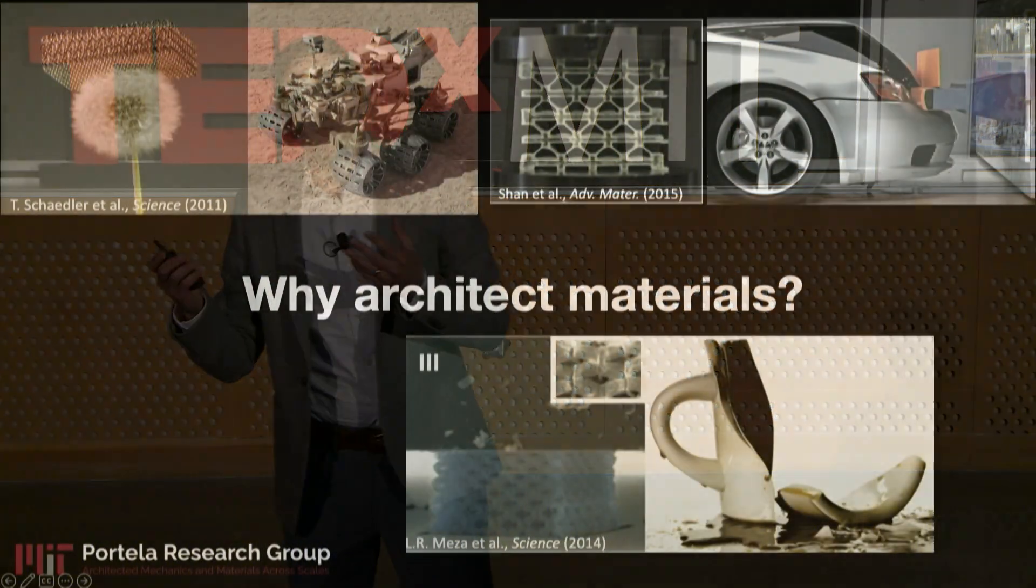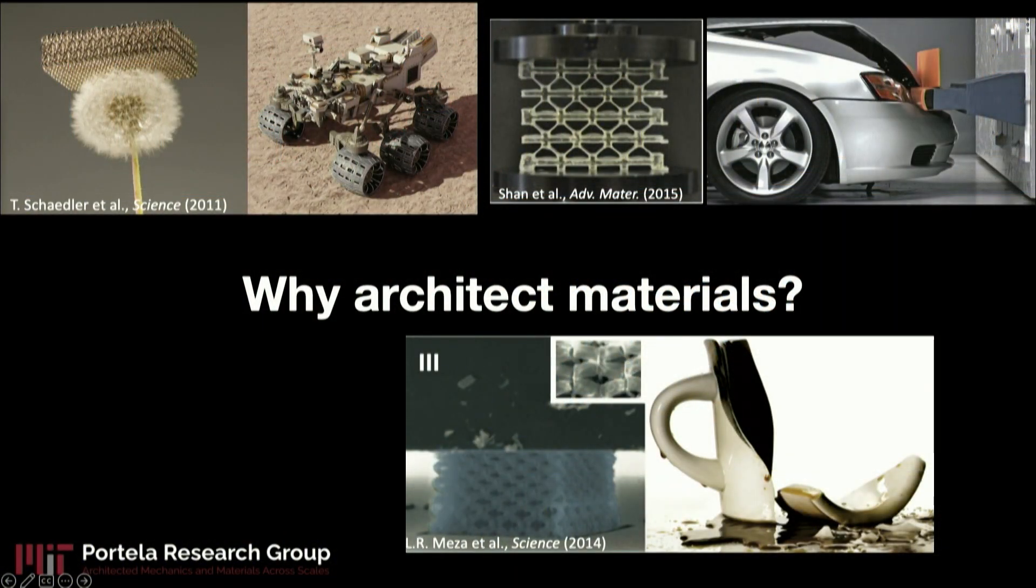Now the third aspect, and this is where nano comes into play, nanoscale materials behave nothing like what we expect them to behave in bulk. An example of these are ceramics. If you have a coffee mug and you drop it, of course it's going to fail in a brittle manner. But we've seen that these ceramics at the nanoscale behave more like a rubber.